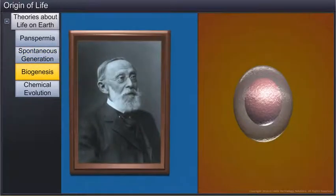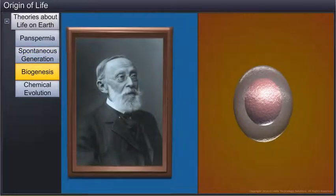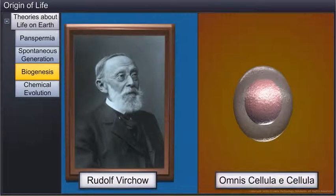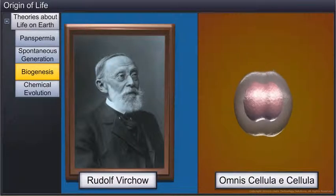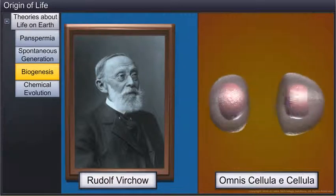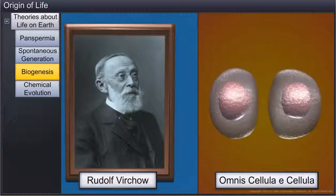The theory of spontaneous generation was in vogue until a German biologist, Rudolf Virchow, challenged it with his theory called Omnis Cellula A Cellula, which expounded that living cells can arise from pre-existing cells. However, he could not prove this theory of biogenesis.